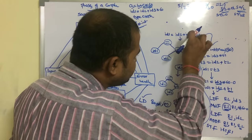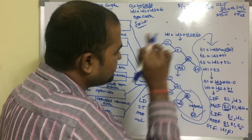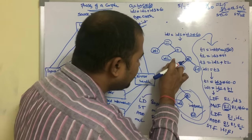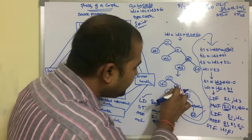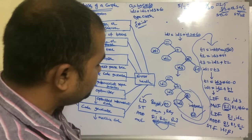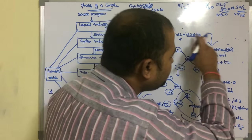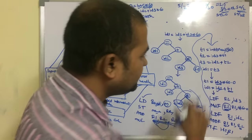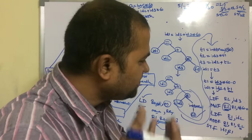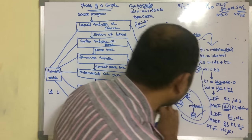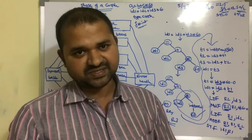In summary: lexical analyzer output is tokens, which are given to syntax analyzer. Syntax analyzer produces a parse tree, given to semantic analyzer. Semantic analyzer produces the correct parse tree, given to intermediate code generator. Intermediate code generator produces intermediate code, given to code optimizer. Code optimizer produces optimized intermediate code, given to code generator. Code generator produces machine code in the form of assembly instructions.